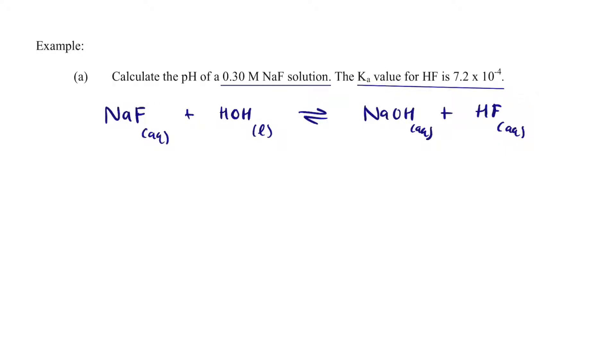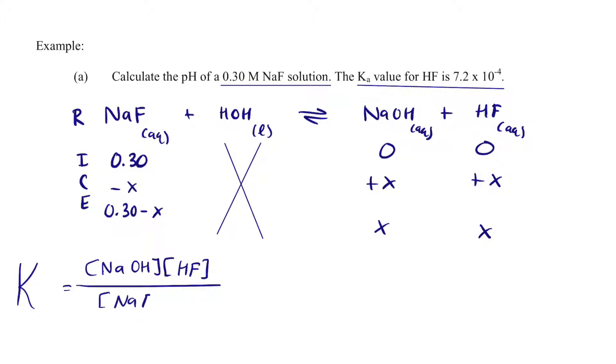and I'm going to make a RICE table because we want to know the exact number. NaF starts out at 0.3 minus X, 0.3, 0 minus X. Water is going to be an X, sodium hydroxide plus X, X, HF plus X, and X.